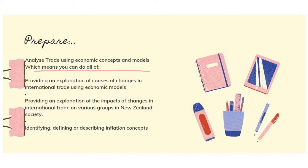The first objective involves providing an explanation of causes of changes in international trade using models. Let's break that down: causes means what causes trade to change. Trade means one country is importing or exporting goods or services with another. Things that cause changes in trade include quotas — which are limits on trade — and tariffs, which are like a tax on trade. These are shown through models such as the two-country model graph.